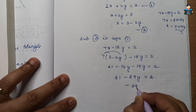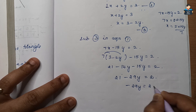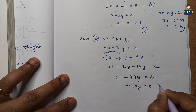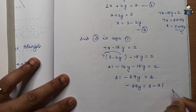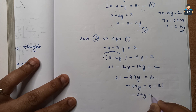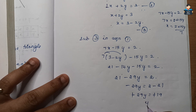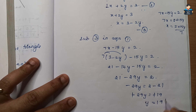Transposing 21 to the other side: minus 29y equals 2 minus 21, which is minus 19. The negatives cancel, giving y equals 19 by 29.